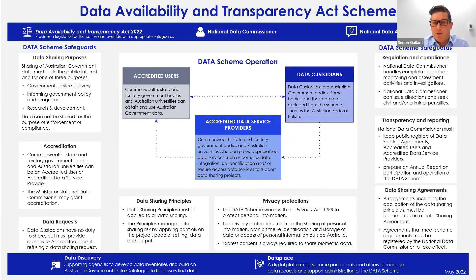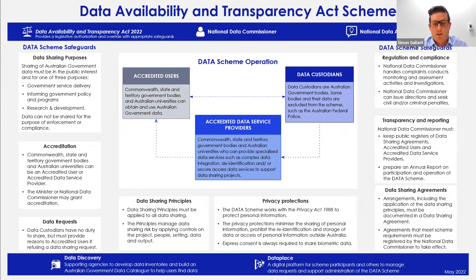This page shows the entire scheme on a single page and it is very complex, but I'll spend about five minutes running through it. The top blue bar includes the Act, the Commissioner, and the advisory council — essentially the governance of the scheme. The Act provides the legislative authorisation and override I discussed, and sets out what the appropriate safeguards are for sharing data safely. The National Data Advisory Council is a group of about 10 government and non-government data sharing experts who provide the Commissioner with advice on how the scheme should be put into operation.